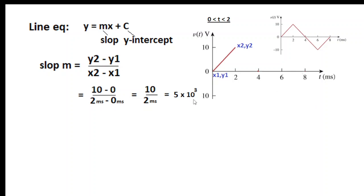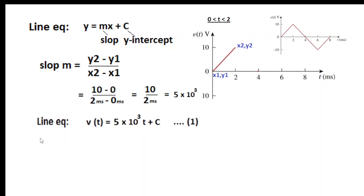The line equation will be written in terms of voltage and time: V(t) = M·t + C, where M is 5×10³ and t is time. For the Y-intercept C: wherever this line touches the Y-axis gives the value of C. In this case the line touches the Y-axis at point (0, 0), and therefore C = 0.